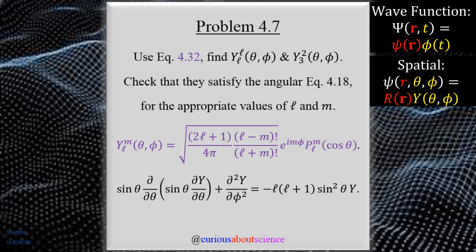What we want to do here in the problem statement is use equation 4.32 — color coded below — to find the spherical harmonic for l and l, and the spherical harmonic for three and two. We then check that they satisfy the angular equation 4.18, defined below, for the appropriate values of l and m. So we're in the same kind of jurisdiction — same concept — but now with a slightly different check and application.